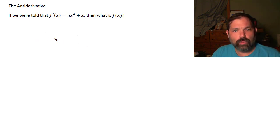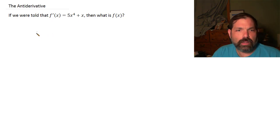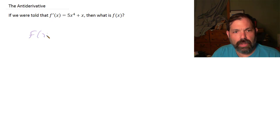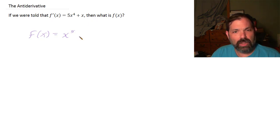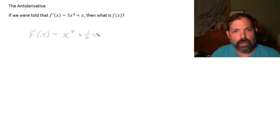If this is the derivative of a function, let's see how we would get the 5x to the fourth. The function must have had an x to the fifth, because the derivative of x to the fifth is 5x to the fourth. Then plus x — to get the x, we'd need an x squared term. The derivative of x squared gives 2x, so we'd need plus one half x squared. The derivative of one half x squared is one half times 2x, which is x.